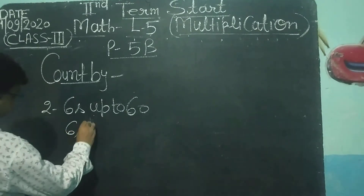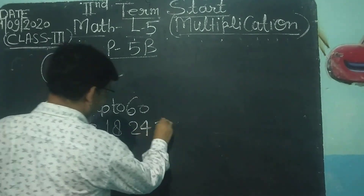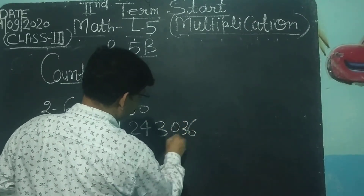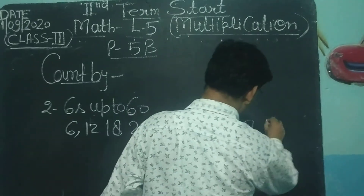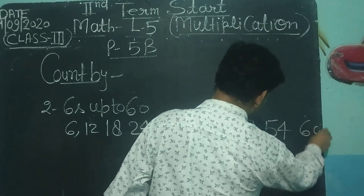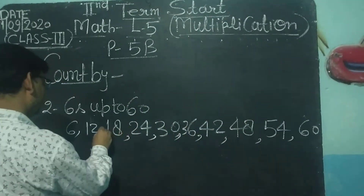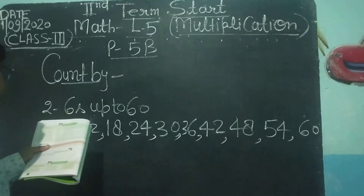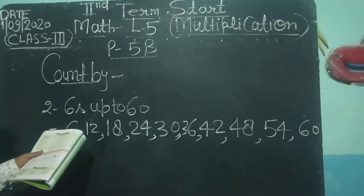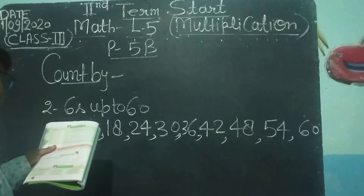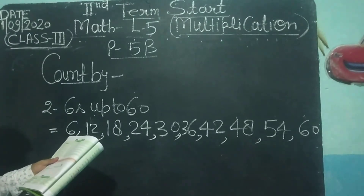तो 6 की table पढ़ते जाएंगे: 6 × 1 = 6, 6 × 2 = 12, 6 × 3 = 18, 6 × 4 = 24, 6 × 5 = 30, 6 × 6 = 36, 6 × 7 = 42, 6 × 8 = 48, 6 × 9 = 54, और 6 × 10 = 60। इस तरीके से यह question होगा। आप table से — 1, 2, 3, 4, 5 — sharing table से, force up to 8 table से, for 5 में 10 table से — इस exercise को आप solve कर लेंगे।